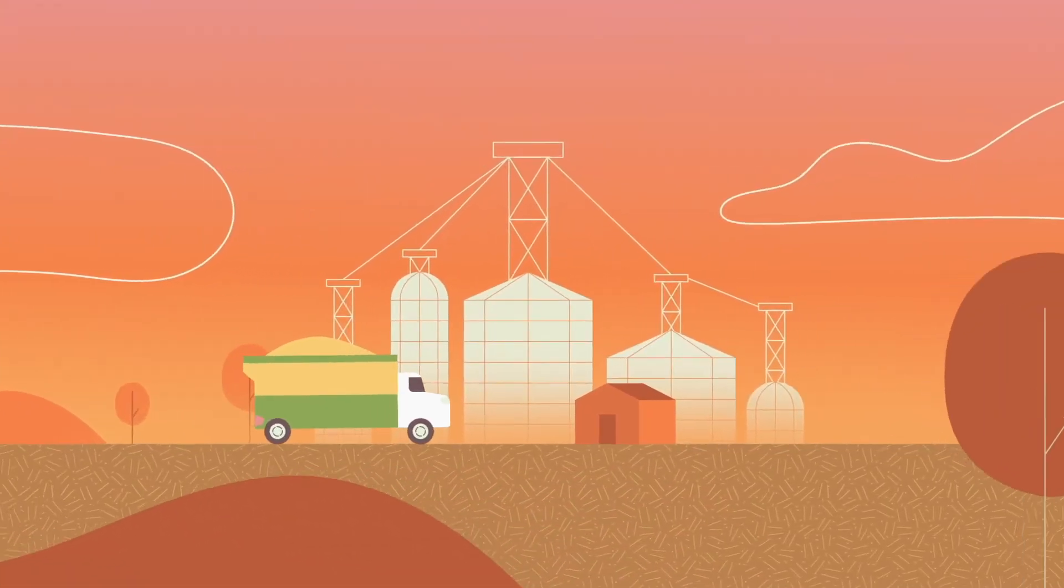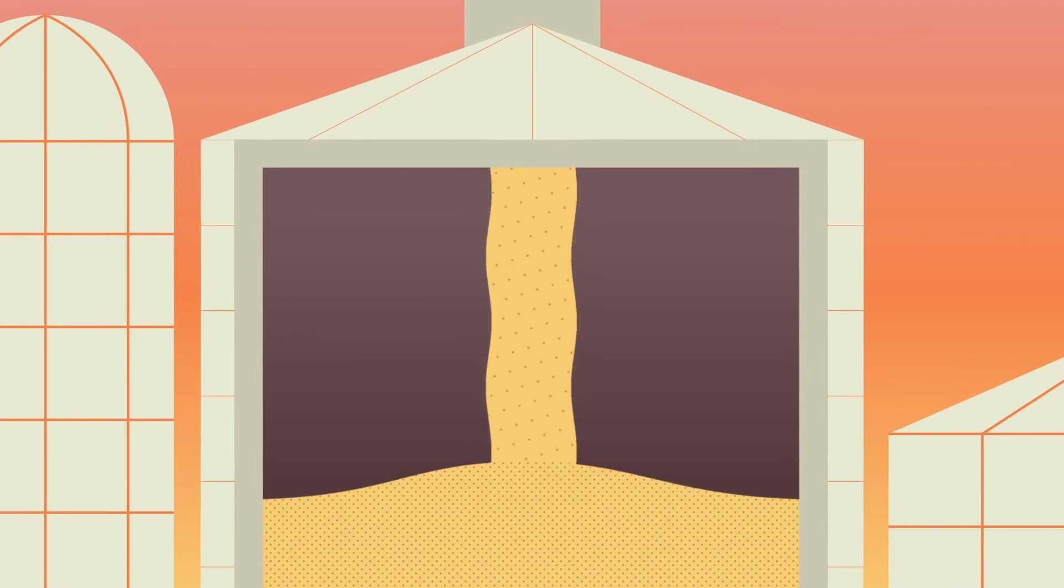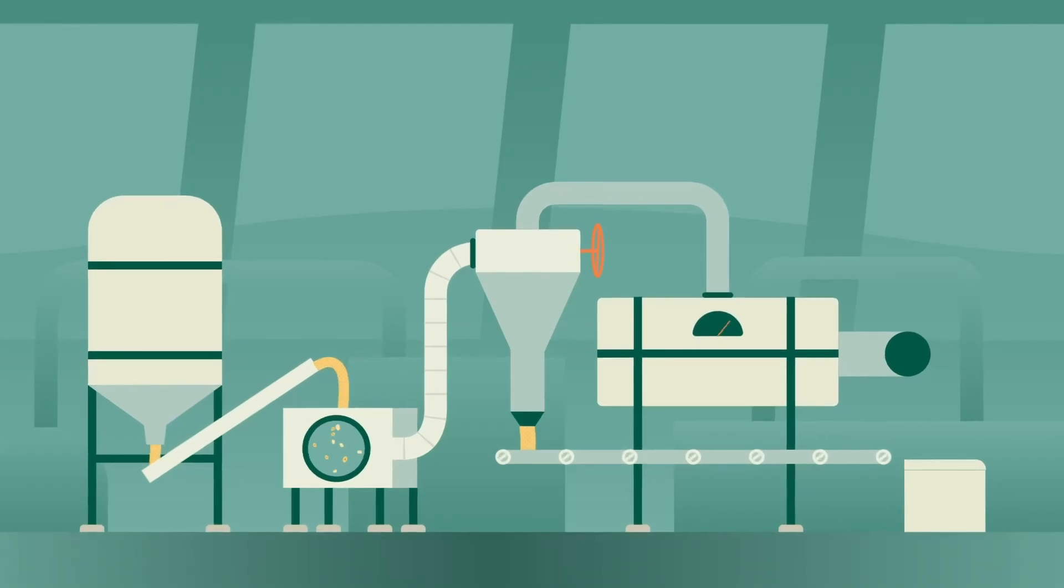The grain elevators store the seeds safely while they search for a processor who will buy them and turn the seeds into oil and meal.